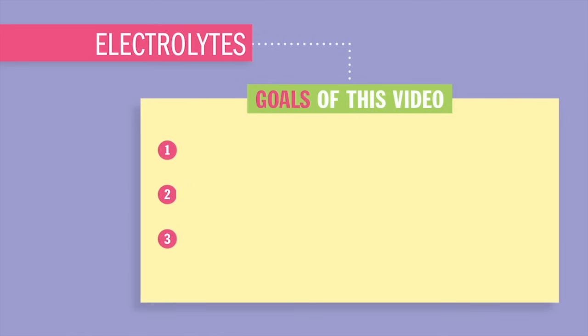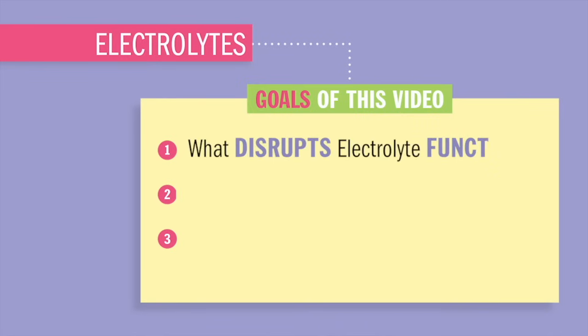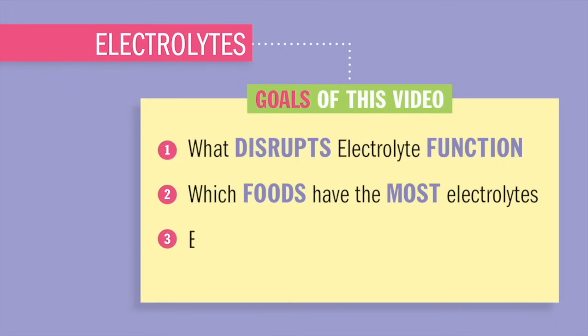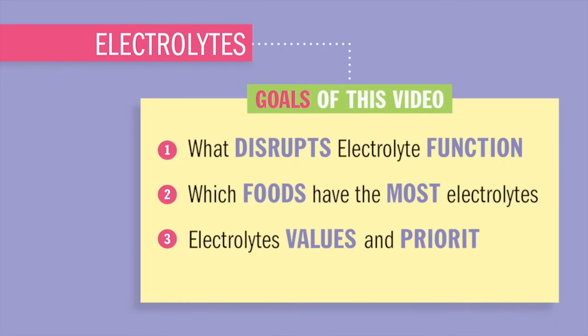Without them your body, your brain, and basically your life would cease to function. So today we'll be going over three things: first, what disrupts electrolyte function; and secondly, which foods have the most electrolytes — something that select-all-that-apply questions love to ask you on your nursing tests.